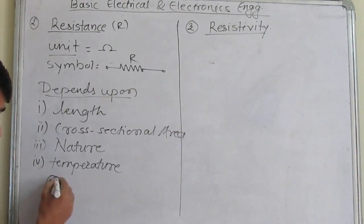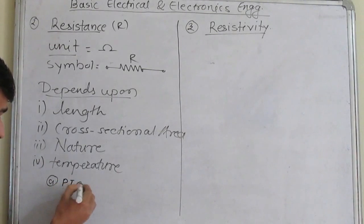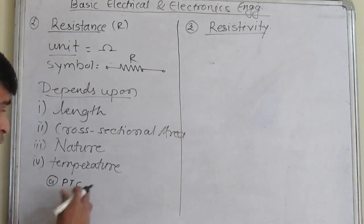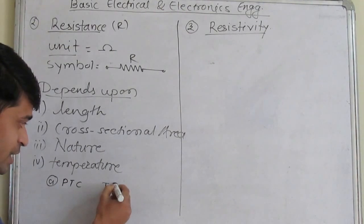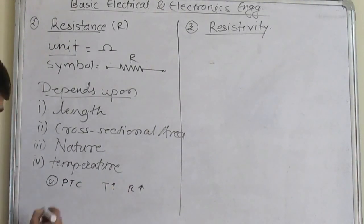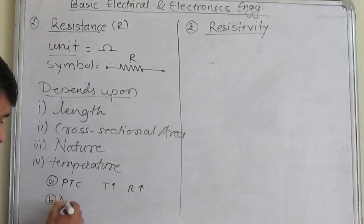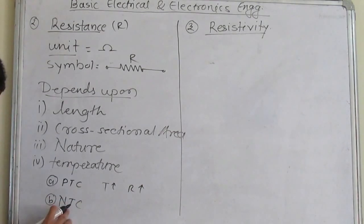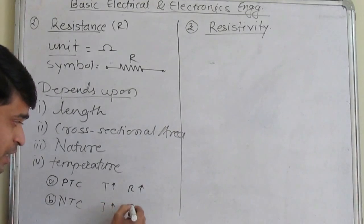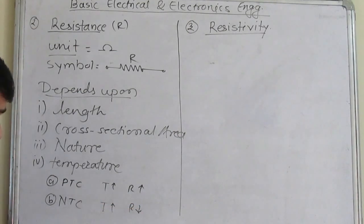First one is PTC — PTC means positive temperature coefficient. That means when temperature increases, resistance also increases. The second one is NTC — NTC is negative temperature coefficient. When temperature increases, resistance decreases. Therefore it is negative temperature coefficient.